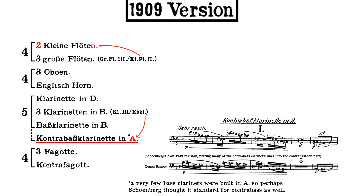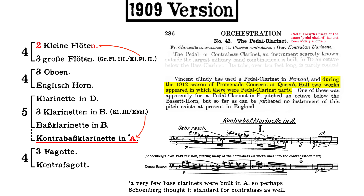It might be just as likely that the average conductor might cobble together something that the contrabassoonist could play, adding the contrabass clarinet lines to their part. It's interesting as well that the great English orchestration teacher of that day, Cecil Forsythe, mentions the use of the contrabass clarinet in the Albert Hall premiere of the Five Pieces — but seemingly can't bring himself to mention Schoenberg by name.